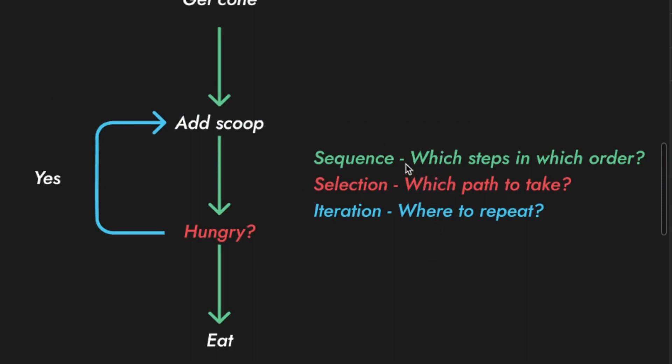Sequence means the order of things which happen. You can't add the ice cream before you get the cone. Selection determines which path you take, kind of the flow of the code whilst it's running. And this is where you might have conditions like if I'm hungry. Depending on the answer to that, I'm going to take a different direction.